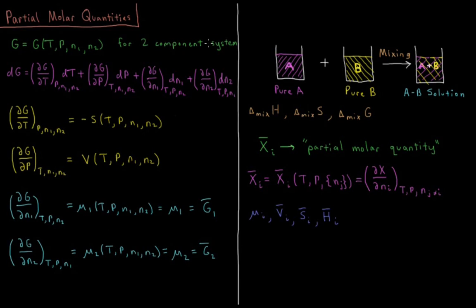For a two-component system, our Gibbs energy is now a function of not only temperature and pressure, but also the number of moles of substance one and substance two. So for a small change in our system, dG equals the partial derivative of G with respect to temperature at constant pressure and moles, times dT, plus the partial derivative with respect to moles of component one at constant T, P, and n₂, times dn₁, plus the partial derivative with respect to moles of component two at constant T, P, and n₁, times dn₂.